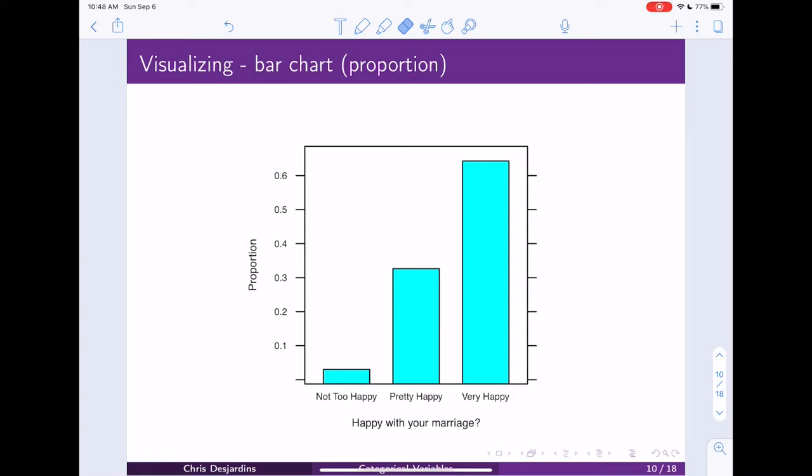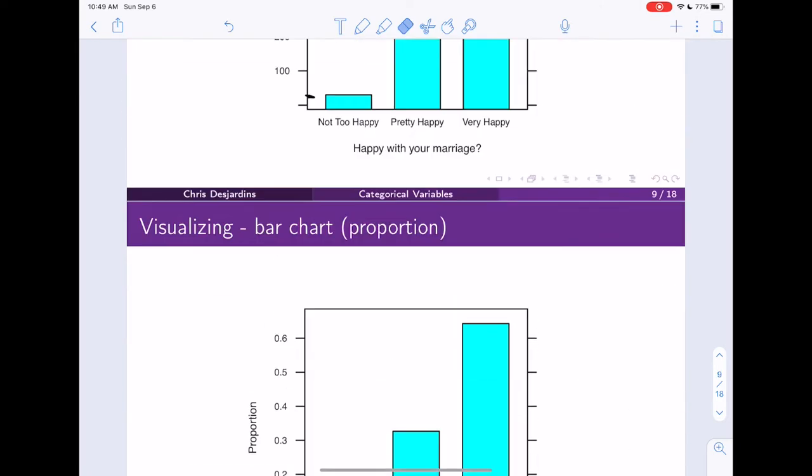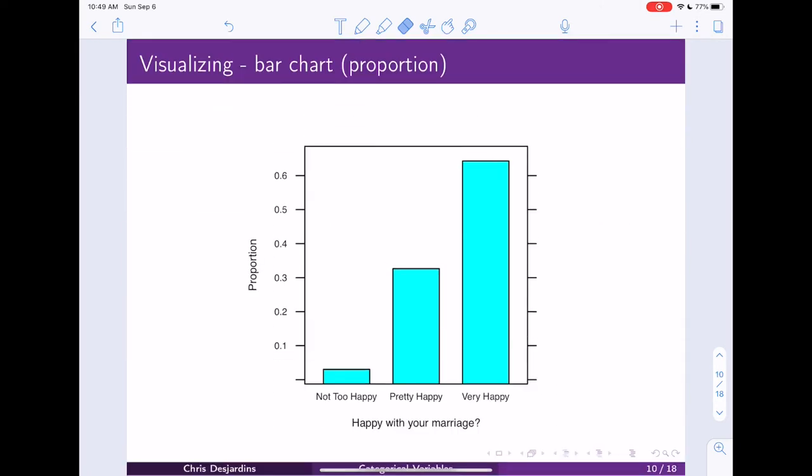And you should notice, if you move back and forth between these two sides, that these have the exact same shape. And they should because they're just being divided by the same number. So all of those categories are being divided by 922. So they're going to have the exact same shape.